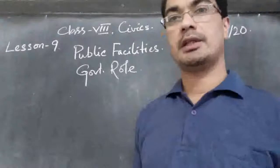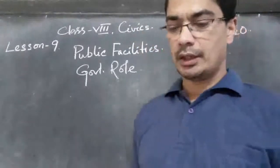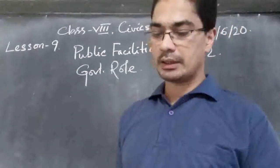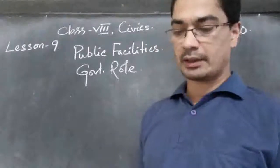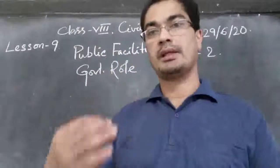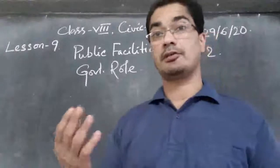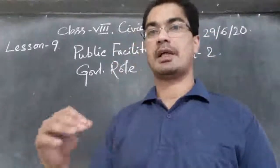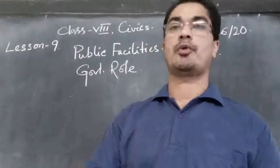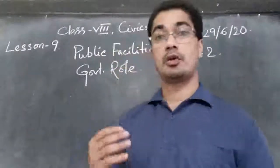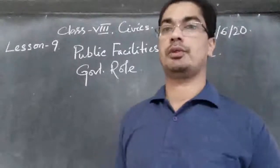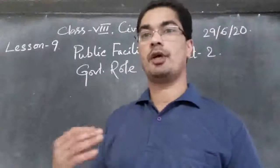In the budget, the government announces the various ways in which it plans to meet its expenses. The main source of revenue for the government is the taxes collected from the people. The government is empowered to collect these taxes and use them for public programs. People pay income tax, GST, and other taxes. Everything we buy from the market includes some tax paid to the government. So the service the government provides is funded by the people's own money — the government collects money from the people and provides facilities for them.